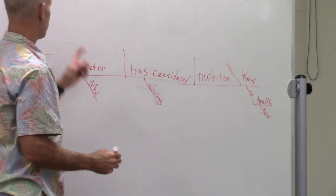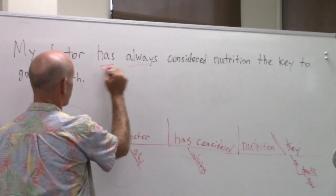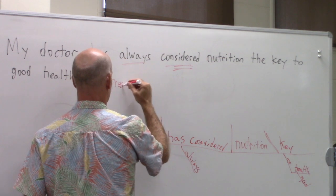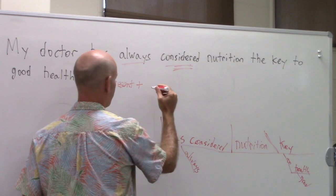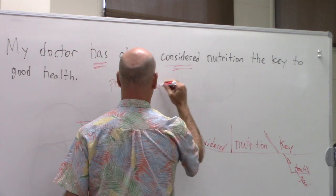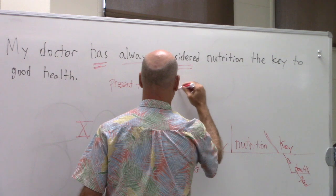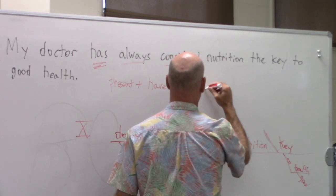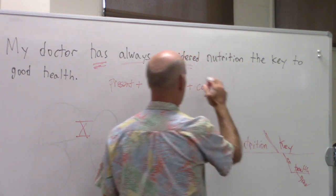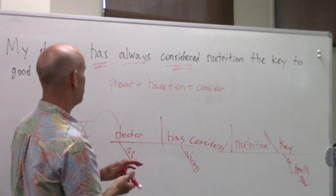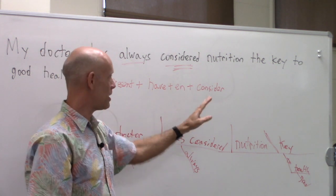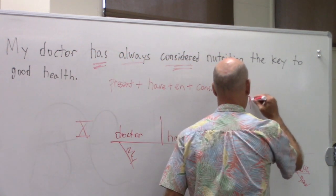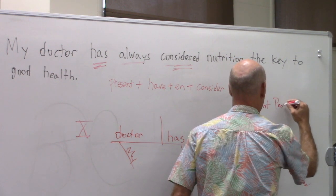Now let's do the verb expansion formula. The verb is has considered. Past or present? Present. Is there a modal? No. Is there have plus -en? Yes — has is the auxiliary and we have the -en ending of consider. Is there be plus -ing? No. So the main verb is consider. What's the verb form? It's perfect — present perfect.